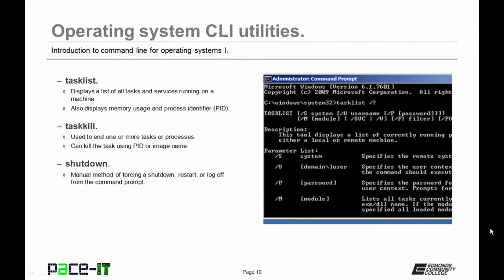Now let's talk about task list. It displays a list of all tasks and services running on a machine, and also displays memory usage and the process identifier — the PID. You should run task list before you run task kill, which is used to end one or more tasks or processes and can kill a task using the PID or image name.